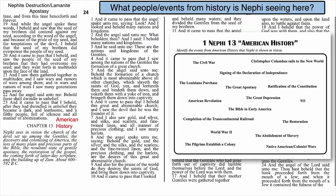1 Nephi 13, verses 1-9. Nephi is shown the formation of a great and abominable church among the Gentiles. Now, that isn't one specific church — please don't teach your students that it's the Catholics. This church slays saints, binds them down, and brings them into captivity. The devil is the founder of that church, and this church loves the material things of the world. What is Nephi seeing here? The great apostasy. The great and abominable church is apostasy in all of its forms — Satan's kingdom, the world, Babylon. Any person or organization that opposes God's work, will, and true disciples.